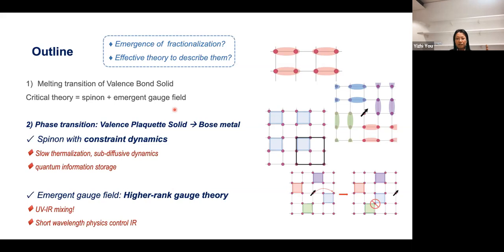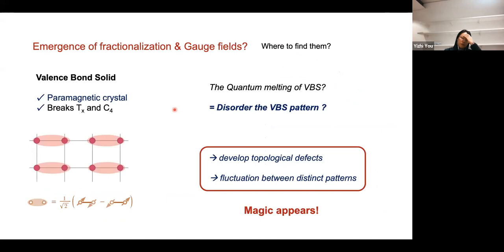These quasi-particles with constrained dynamics can give rise to lots of interesting phenomena and could be useful for building quantum devices, since their constrained dynamics can exhibit glassy behavior with slow thermalization. This makes them potentially useful for robust quantum information storage or a quantum hard drive on intermediate timescales. At the quantum critical region there also exists an emergent gauge field described by a higher-rank gauge theory, with the peculiar feature that low energy behavior is totally controlled by the short wavelength physics.